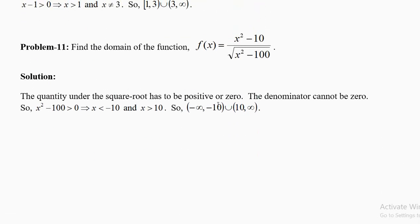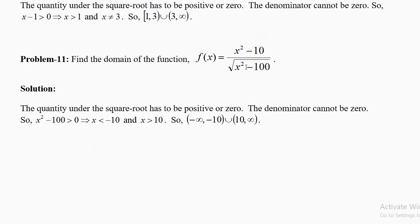Find the domain of f(x) = √(x² − 10)/(x² − 100). We need x² − 100 > 0 (combining the square root condition and no division by zero), which gives x < −10 or x > 10. So the domain is (−∞, −10) ∪ (10, +∞). For example, x = 11: 121 − 100 = 21 > 0, valid. x = −11: (−11)² = 121, also valid.